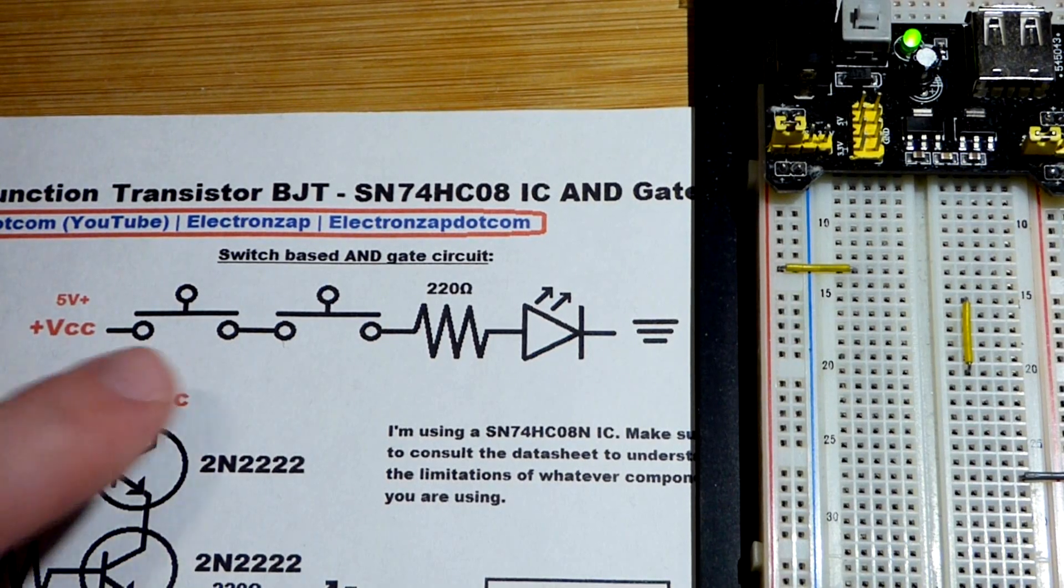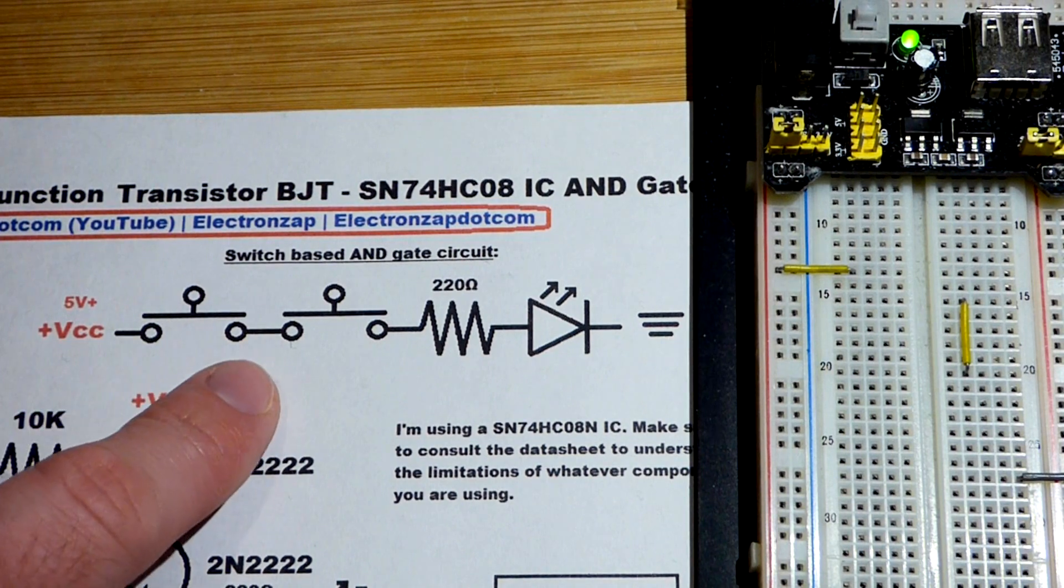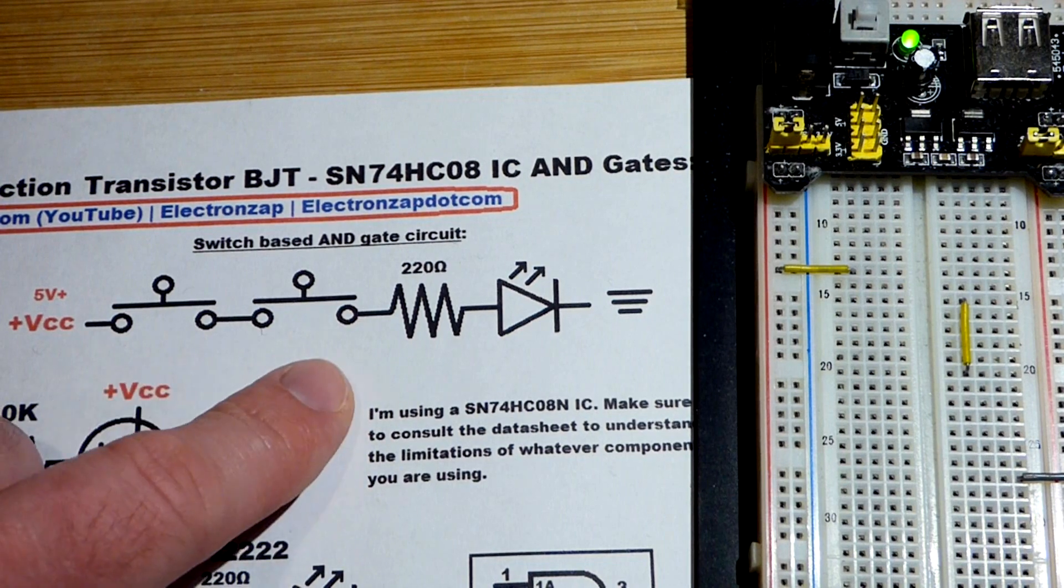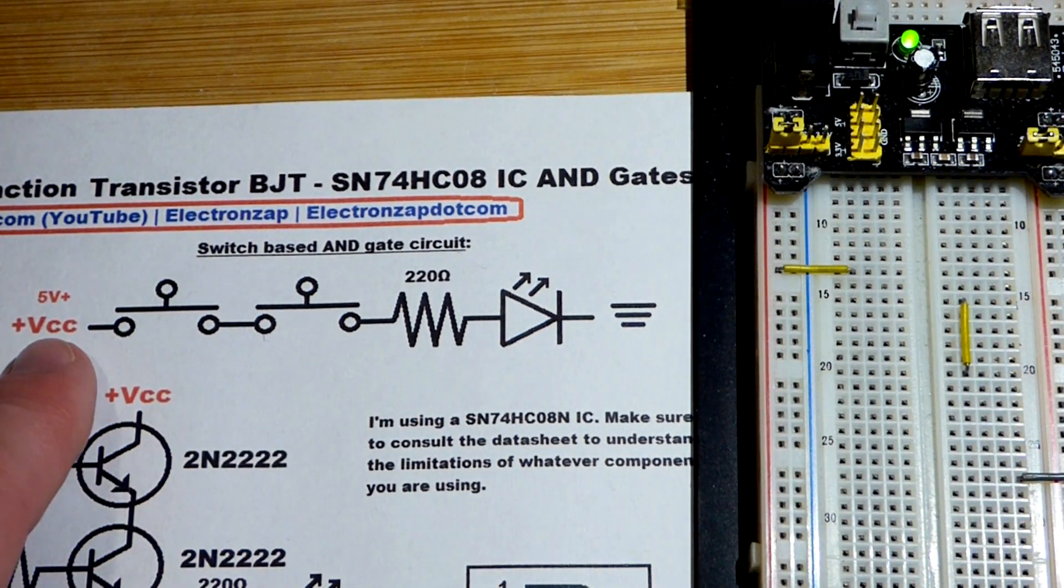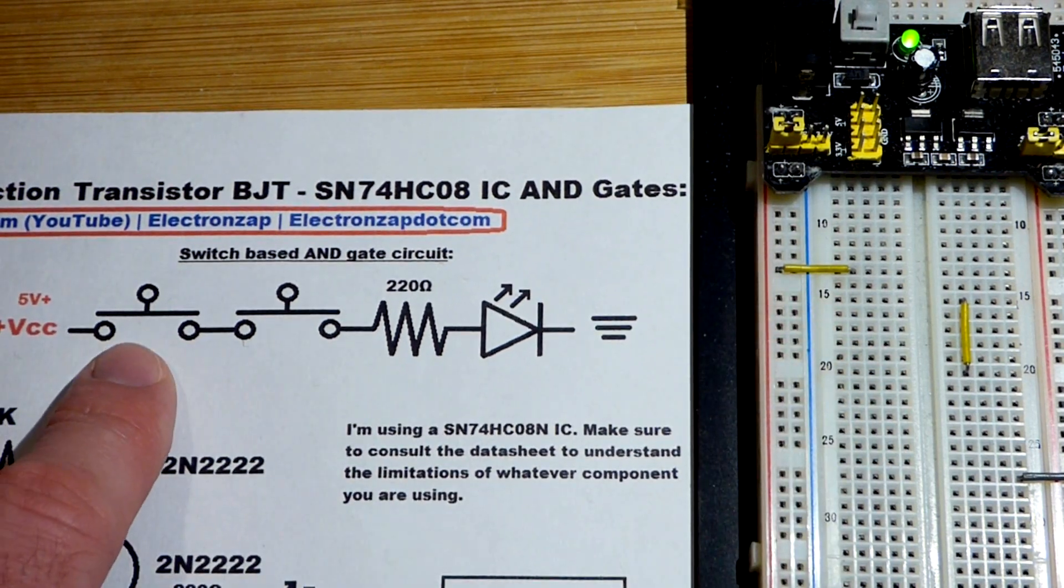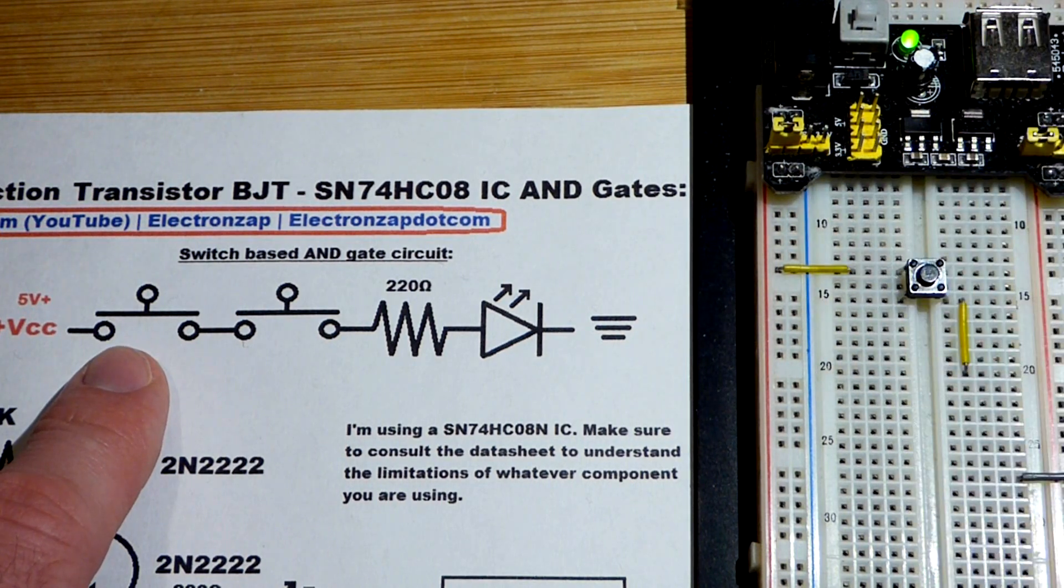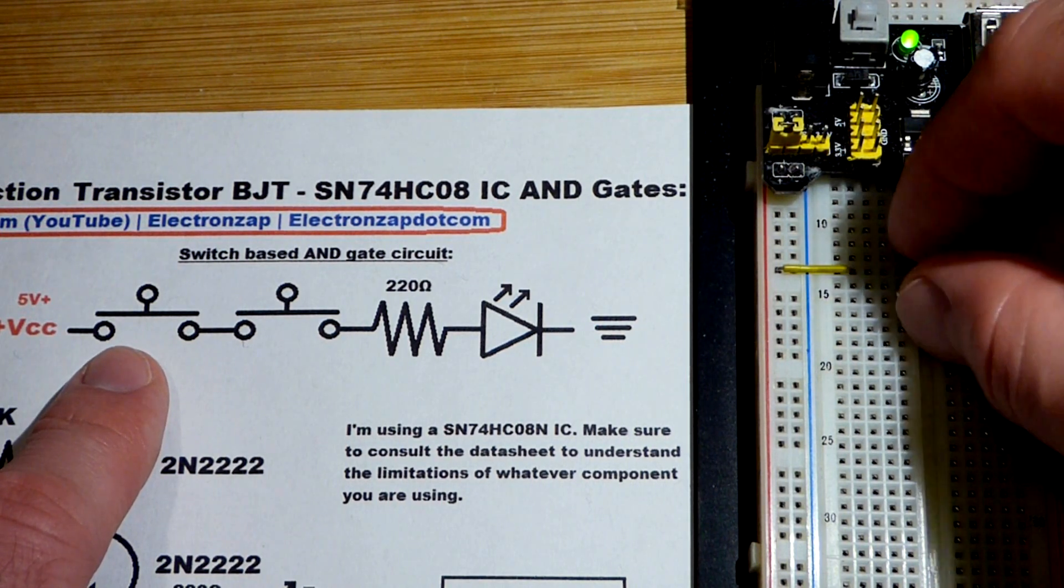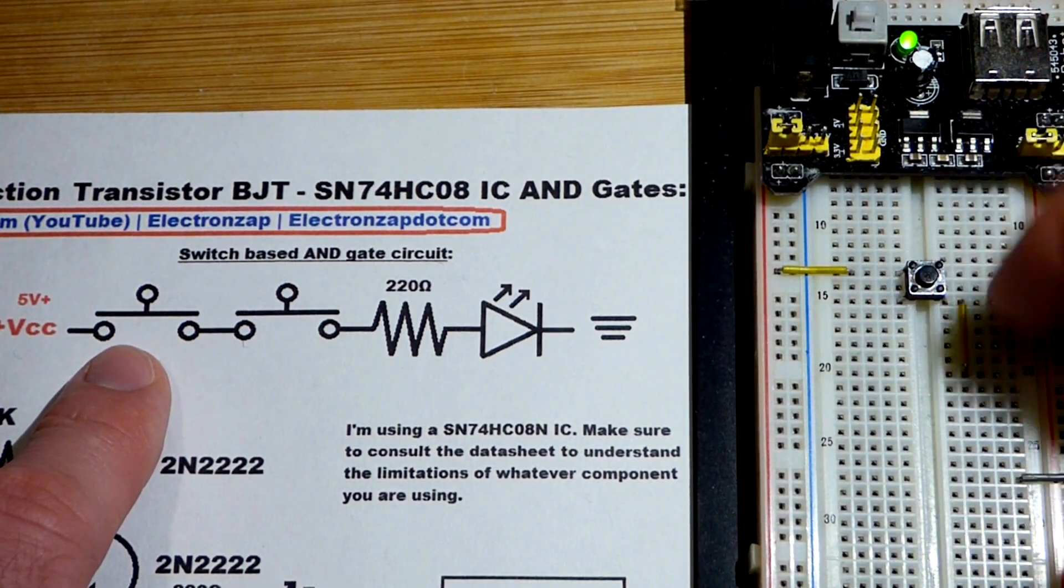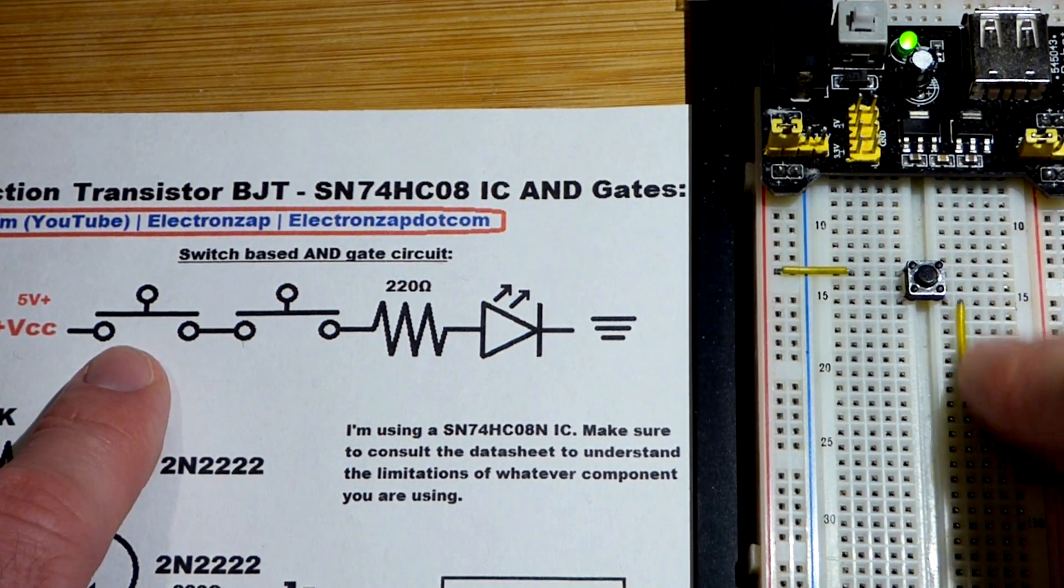To start this video on the AND logic gate, we're going to do a switch circuit. We're mostly going to focus on the transistor circuit, but the switch circuit is easier to understand. To begin with, we have the positive side of the power supply there. We're going to attach a switch. I have these pushbutton switches here that fit nicely into the breadboard. As long as you insert it in the right direction, the top is always connected, and the bottom is always connected. When you close the switch, you connect top to bottom.